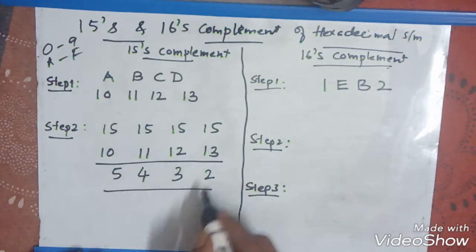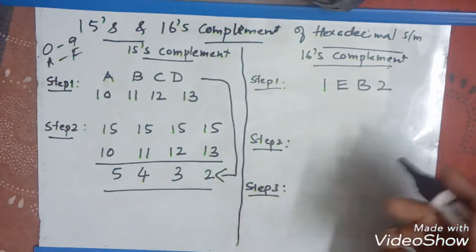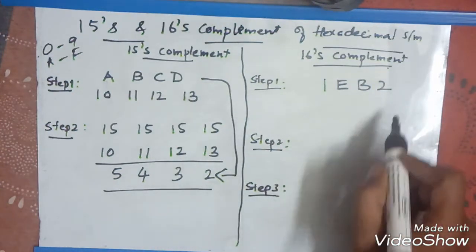This is the fifteenth complement of a, b, c, d. Now, let us go for the next section. That is, sixteenth complement of a given number.